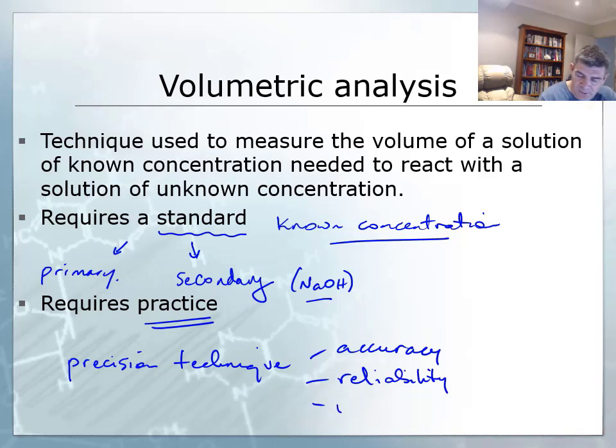And also validity. We need to make sure that what we're using is actually giving us the correct results. Validity often relates to a very important component of volumetric analysis, which is the selection of an indicator. It's not a simple matter of just picking any old indicator that will tell you what you need to know about your solutions. Different indicators can be used for different types of combinations of acids and bases, and we'll explore that as we go further into this section of the module.